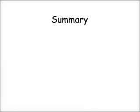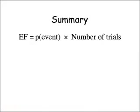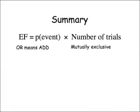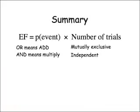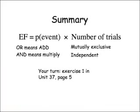In summary: the expected frequency is the probability of the event times the number of trials — it may be different to the observed frequency. OR means add, when you've got mutually exclusive events. AND means multiply, when you've got independent events. If you do some more work on page 5, unit 37, you'll find some relatively challenging questions which test your knowledge of all this. And that brings us to the end of part one of probability. Thank you.